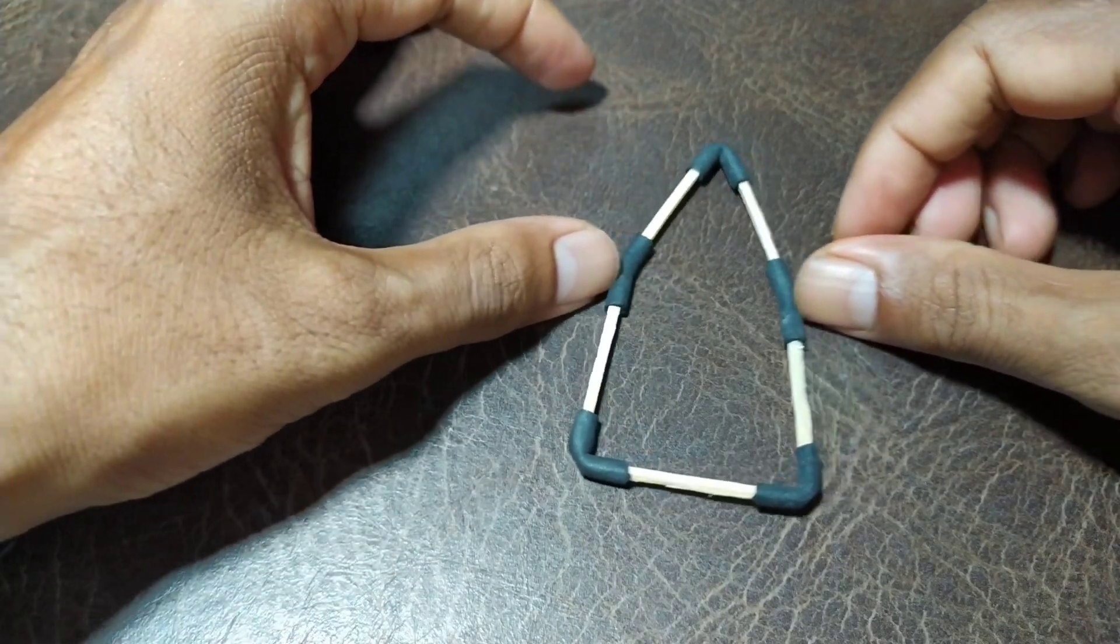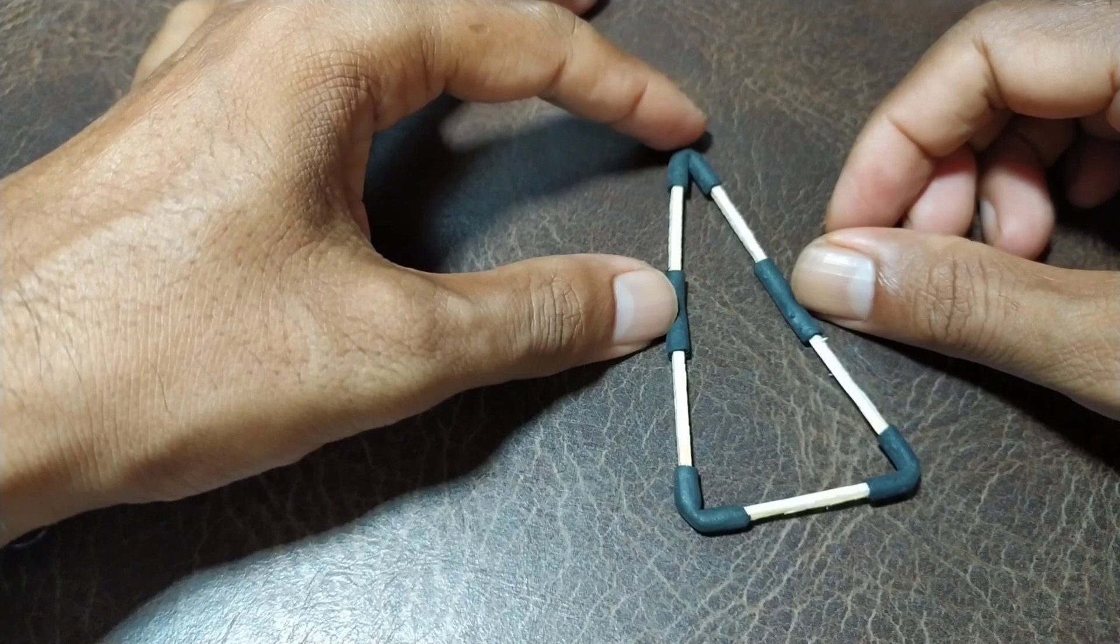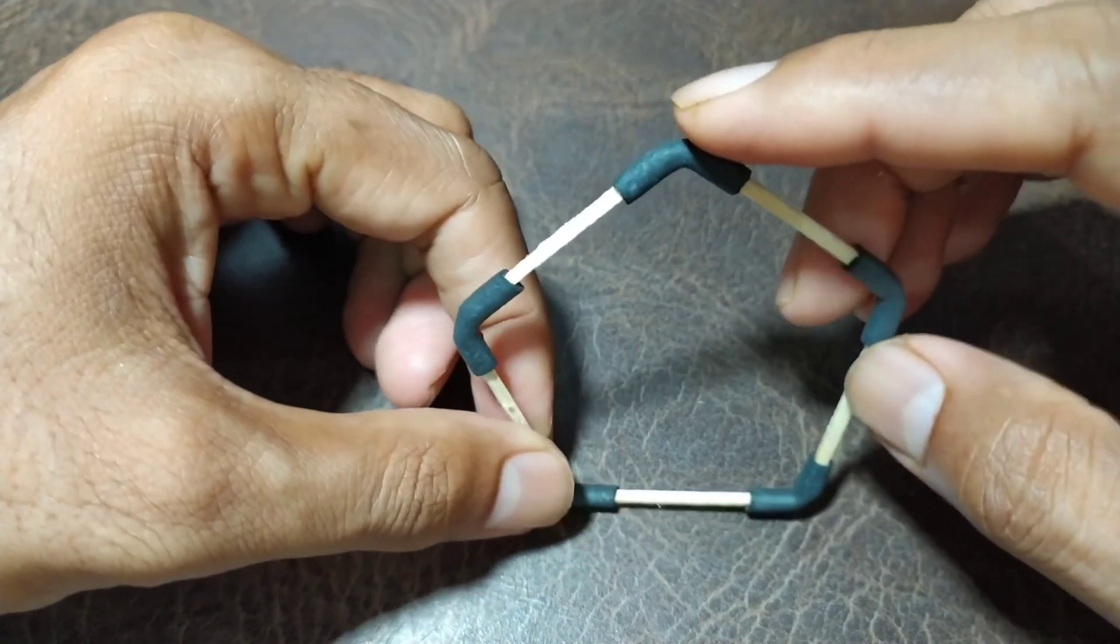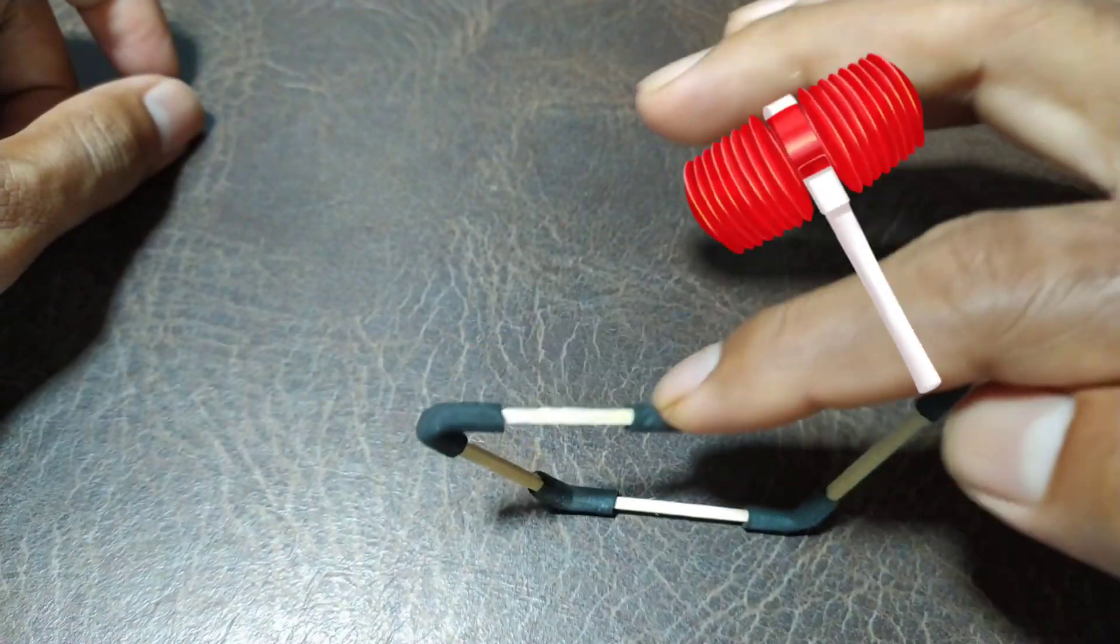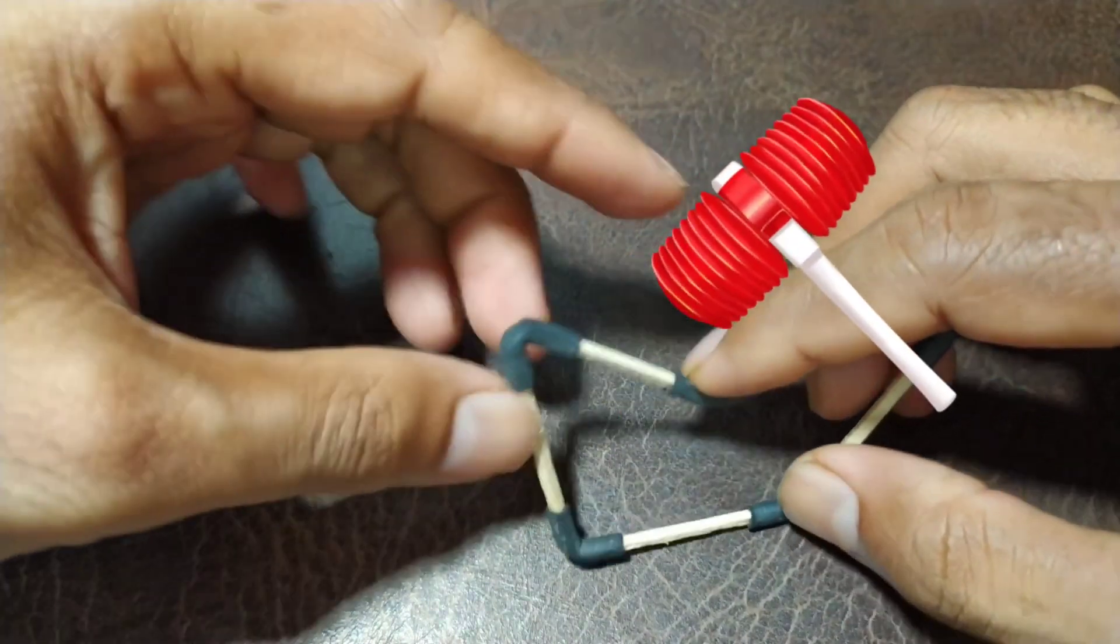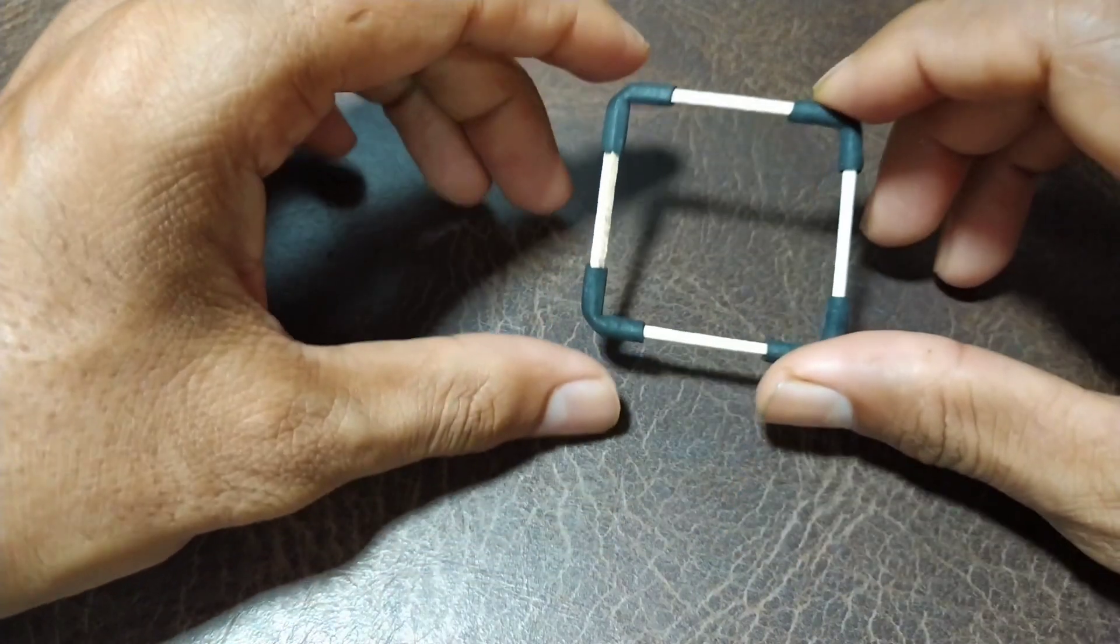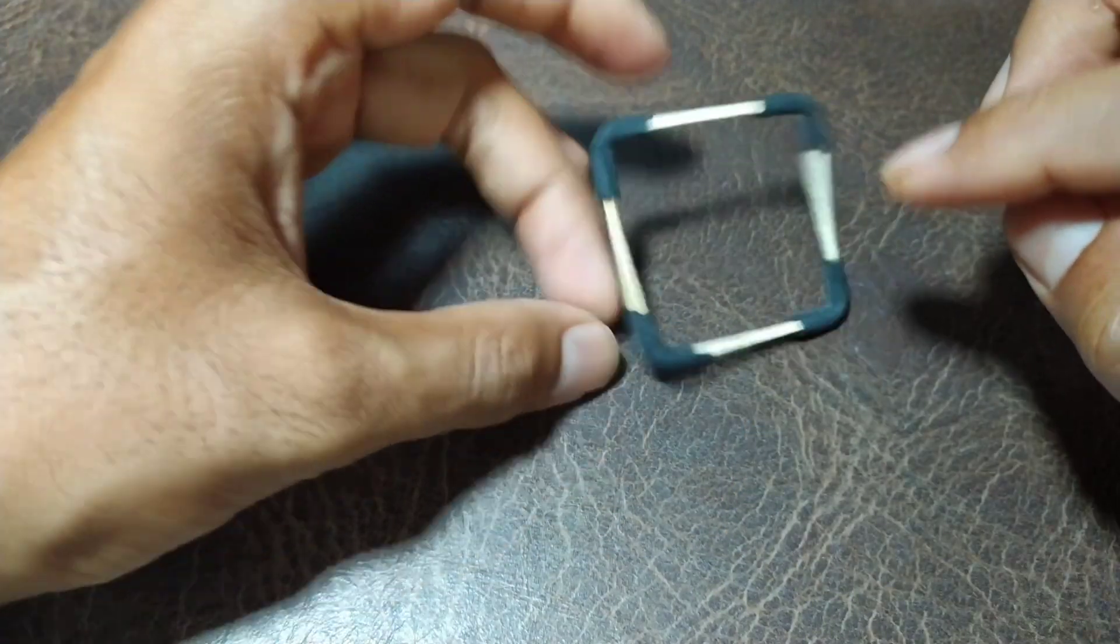It is again deforming into a triangle or any other shape that we want it to be. So again, pentagon is also not very sturdy, so it will also not bear heavy loads. And the same thing will happen with a square also.